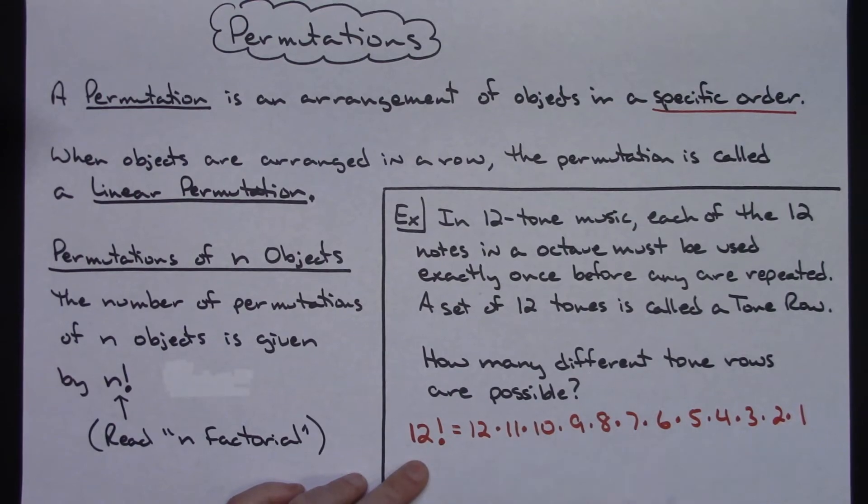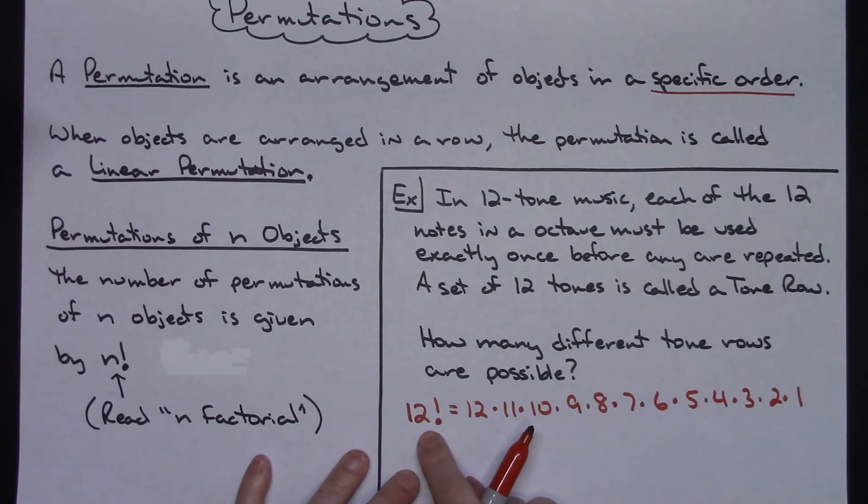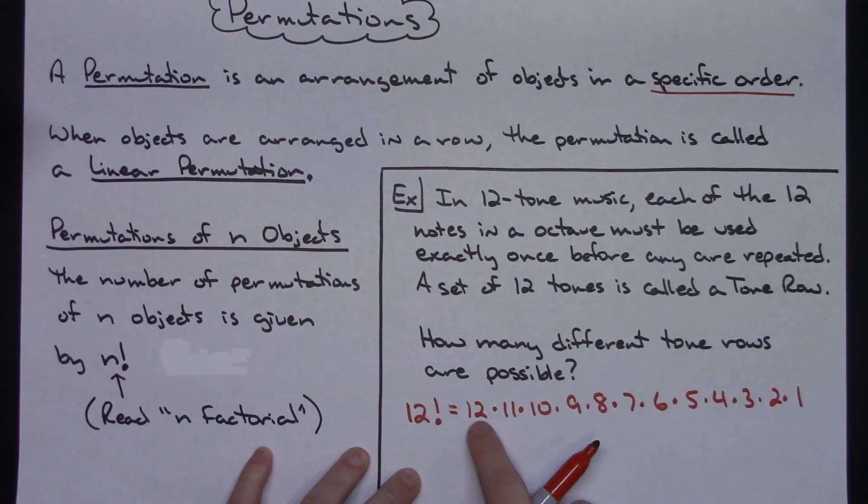Which is kind of long. You could do it individually on your calculator. Most of the time there will be a factorial button on your calculator and you could just do 12 factorial. If you do not have one, then you would take 12 times 11 times 10 times 9 times 8 all the way down to 1.